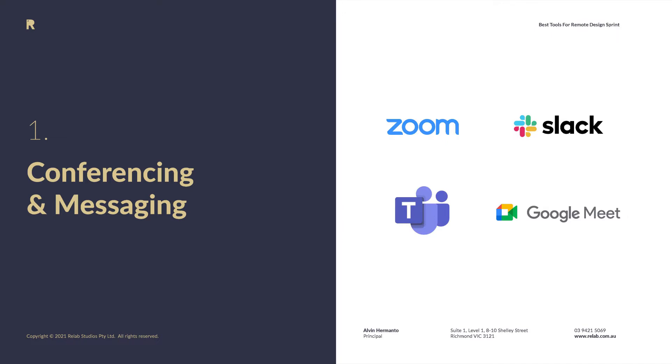Zoom is an obvious one that we use, and also Google Meet, because here at ReLab we live in the Google ecosystem. Microsoft Teams is another option. As long as you're able to communicate and video conference, that's key — though there are certain things where you can switch your video off and just focus on audio. There's also Slack, which you can use to chat, send quick files, and for instant messaging. Slack also allows you to do quick calls as well.